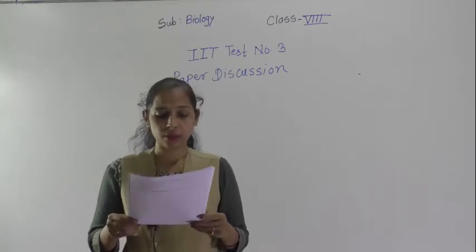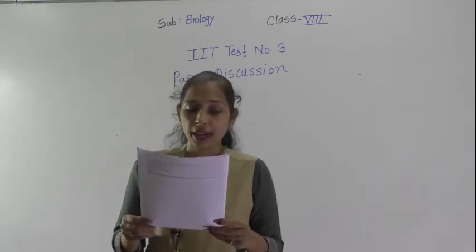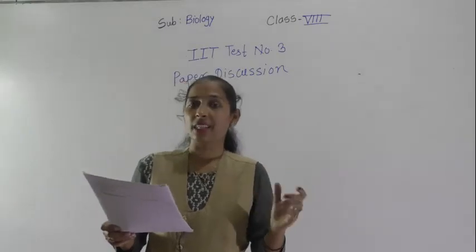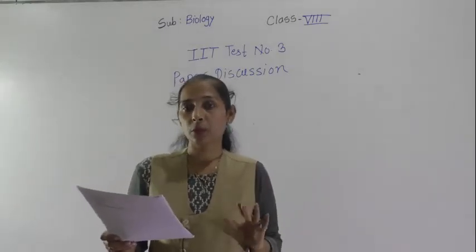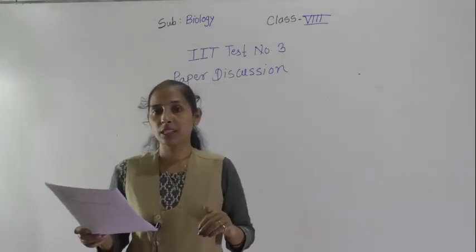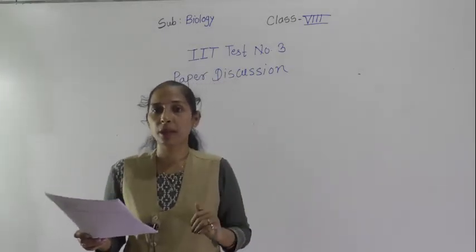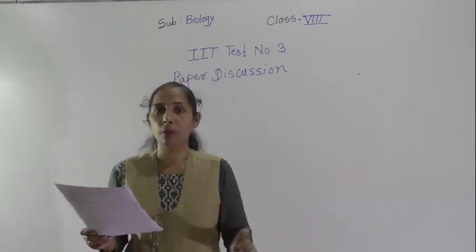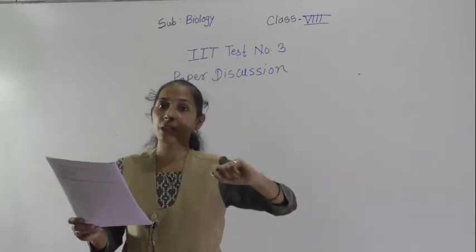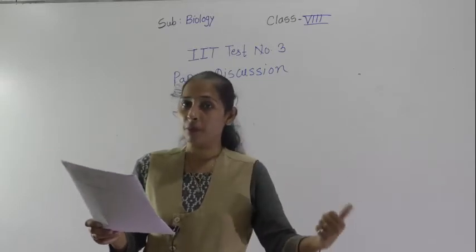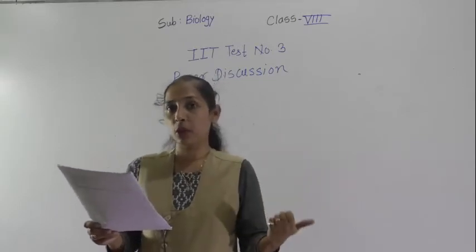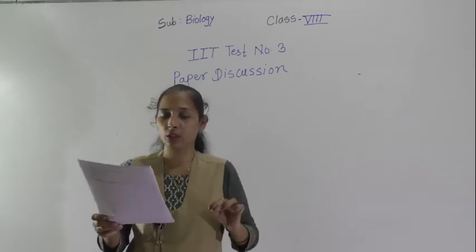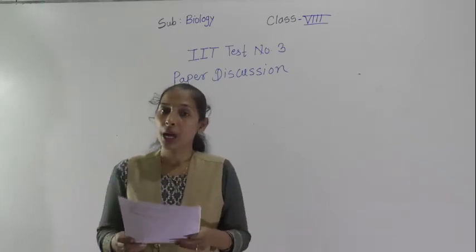Question number 3: why do we not count chlorophyll directly? Because plastids are of three types: chromoplast, leucoplast, and chloroplast. Inside the chloroplast there is a pigment called chlorophyll. So chlorophyll directly it will not come — it is only one part of the plastid. So the correct option is plastids.